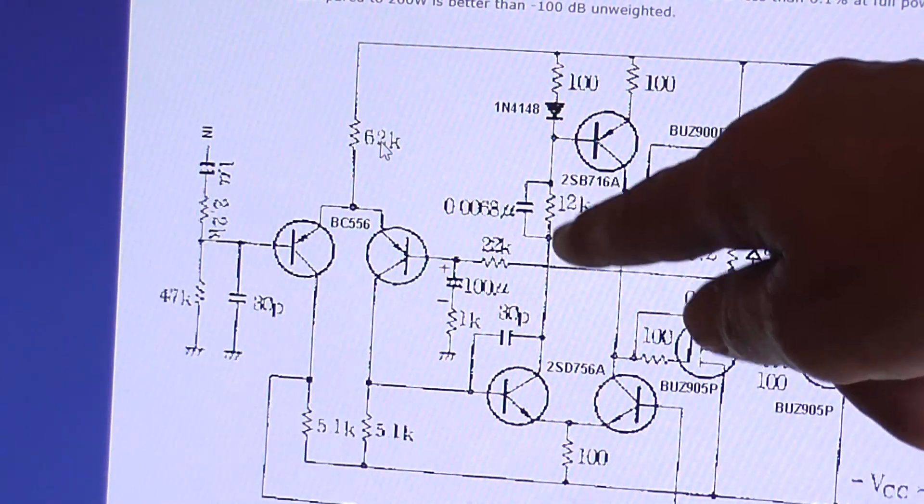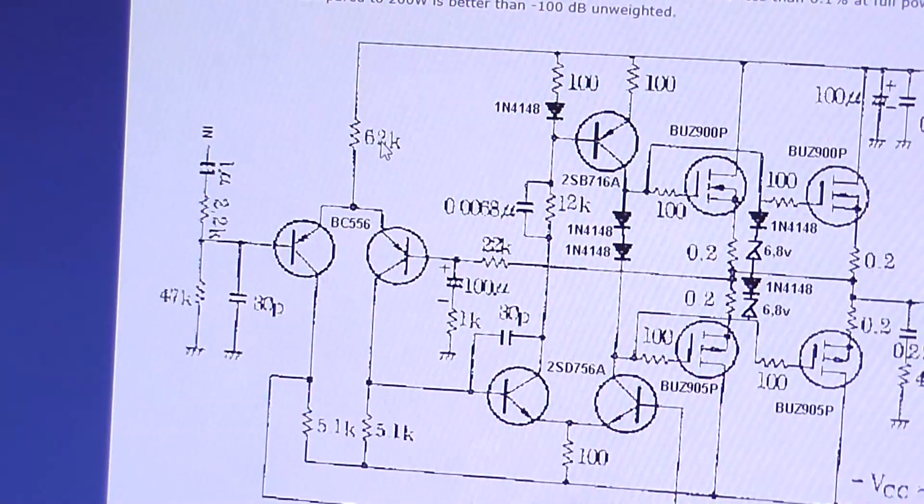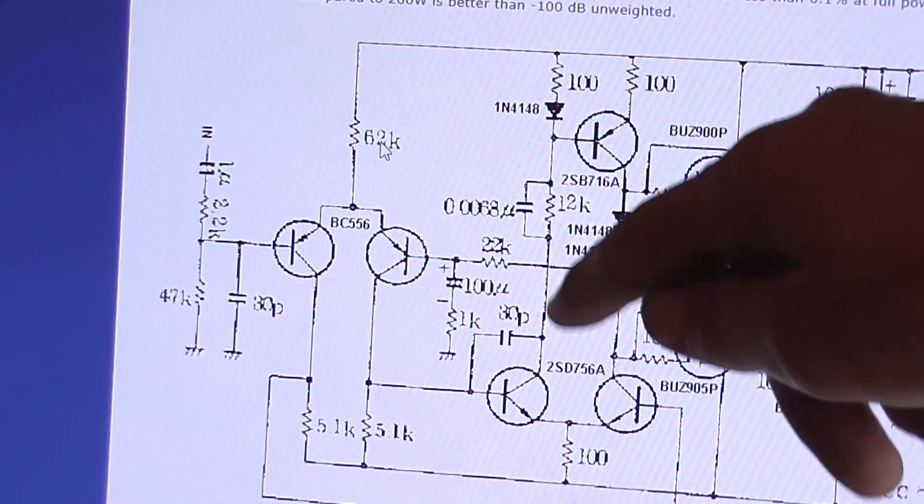I measured the voltage drop across this 12k resistor and that's showing 60 volts. So yeah that's not right.